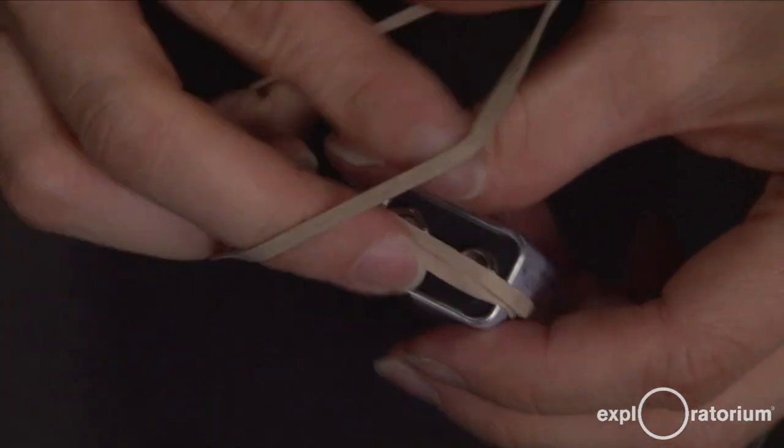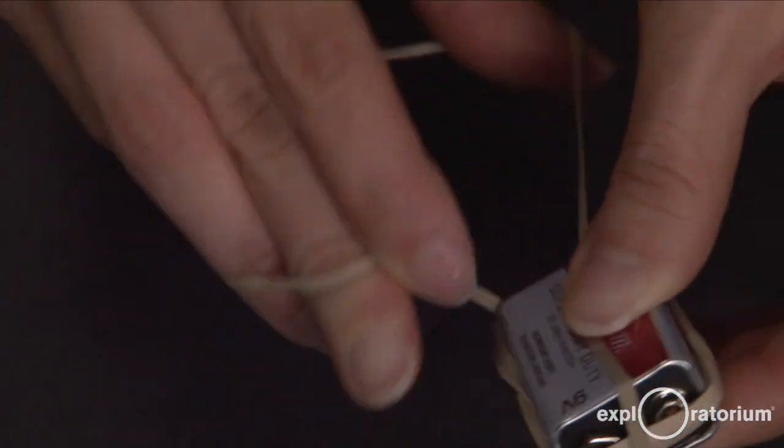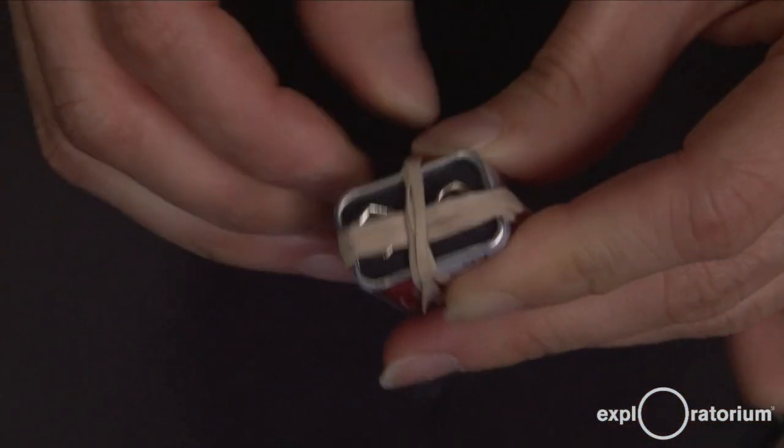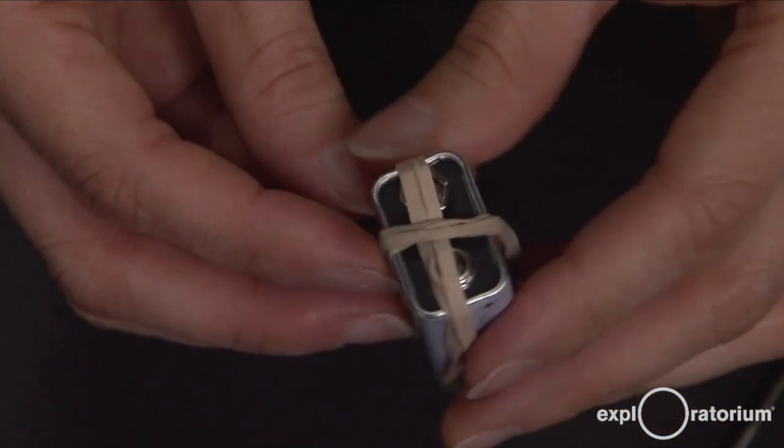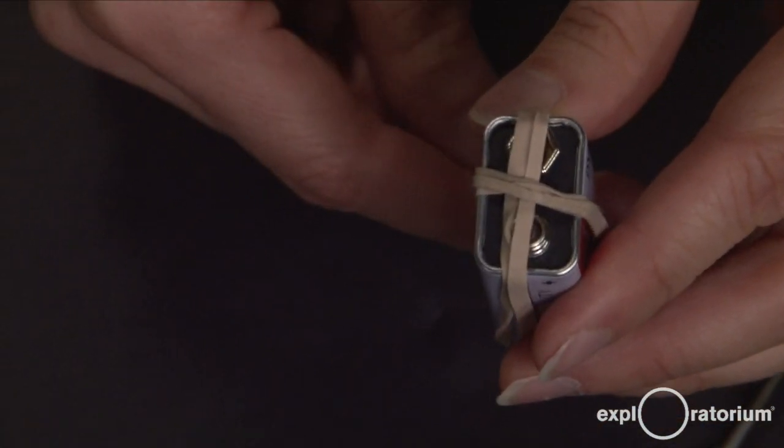Then take the second rubber band and wrap it around the other way, kind of the narrow end of the battery. You can see that you've made a little cross of rubber bands across the terminals. These are just to help hold the stainless steel screws in place.